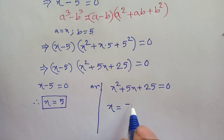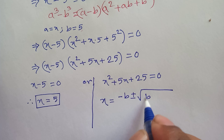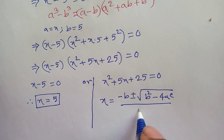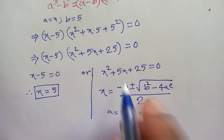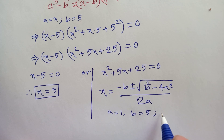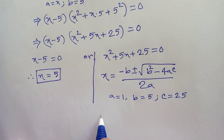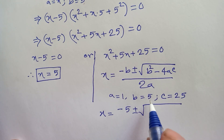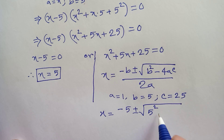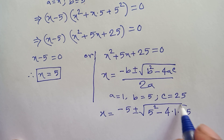We know that x equals negative b plus or minus the square root of (b squared minus 4ac) over 2a. Here a equals 1, b equals 5, and c equals 25. So our equation will be x equals negative 5 plus or minus the square root of (5 squared minus 4 times 1 times 25) over 2 times 1.